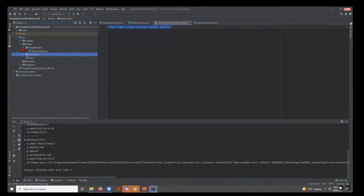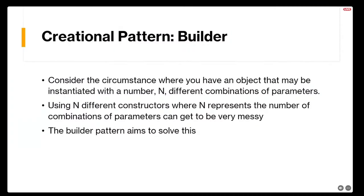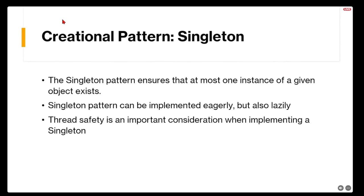The next pattern to discuss is another creational pattern: the singleton. The singleton pattern has one main job — it ensures that at most one instance of a given class exists. It can be implemented eagerly, jumping into memory as soon as the class is loaded, or lazily, going into memory at the time it's first used. Thread safety is really important with the singleton, and there are specific considerations that must be made.